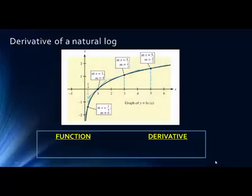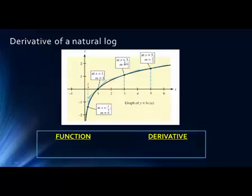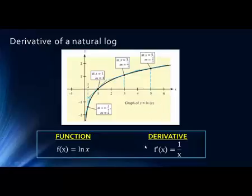Here we have a function f(x) = ln(x), and we have the x value at any point along with the slope of the tangent at that point. Notice the pattern: when x equals 1, the slope equals 1; when x equals 3, the slope is 1/3; when x equals 5, the slope is 1/5; when x equals 1/4, the slope is 4. So the derivative is actually 1 over x.